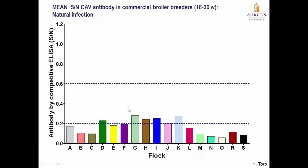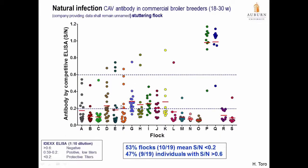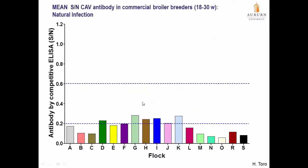I always like to show the same values using a bar graph, because it is important to see that if you use a bar graph, all these values will seem very nicely positive. But indeed they are not. As I showed before, these flocks do have some birds that are antibody negative. So you don't want to rely solely on a bar graph when evaluating your flocks unless you also see the error bars.